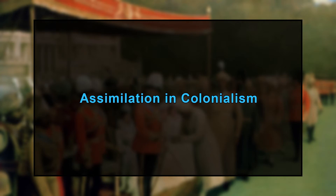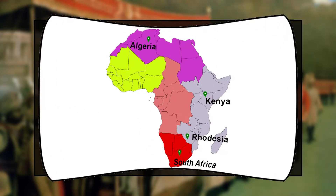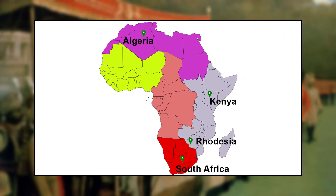In cases of assimilation, the colonizer acted as a donor and the colonized people constituted the host culture, with a vast amount of cultural transfer going from donor to host. In relative equilibrium, neither extermination nor assimilation occurred; instead, settlers and indigenous peoples lived side by side or apart, but in either case there was lack of eradication or assimilation. Former colonies exemplifying this type include Algeria, Rhodesia, Kenya, and South Africa.